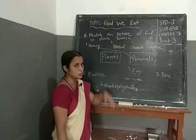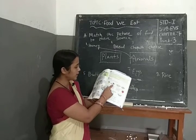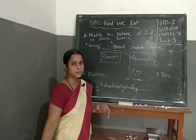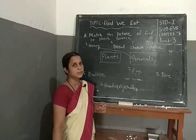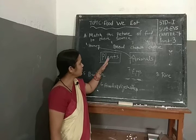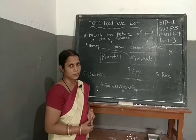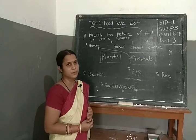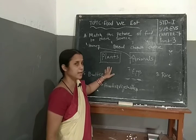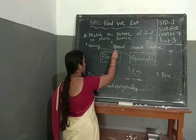Next, number 2, bread. Bread — is bread a plant product or animal product? We make bread from flour, and flour comes from wheat, and wheat is a plant product. So bread is a plant product.